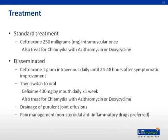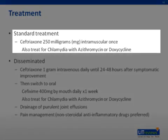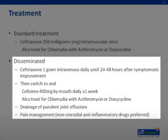How do we treat gonococcal infection? The mainstay of treatment for localized infection is one intramuscular dose of ceftriaxone. Gonorrhea infection is often accompanied by chlamydia co-infection, so you should also treat for chlamydia with either azithromycin or doxycycline. For disseminated gonococcal infection, treatment is still with ceftriaxone with chlamydia coverage, but the dose is increased and the duration extended until one to two days after symptomatic improvement, followed by a one-week course of oral antibiotics. Symptomatic management of joint effusions by drainage and pain management with NSAIDs may also be of use.